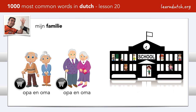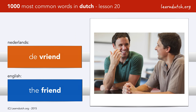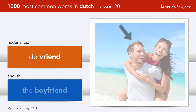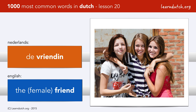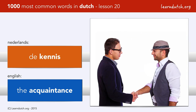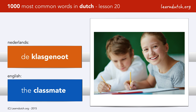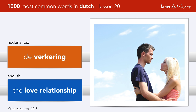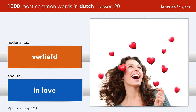That's all about family. Let's have a look at some other personal relationships. De vriend — and that can mean both friend and boyfriend. De vriendin — and that is a female friend or a girlfriend. De kennis. And another word: de bekende. De klasgenoot. De verkering. Verliefd.